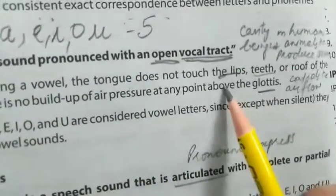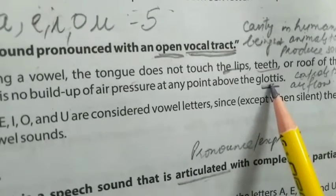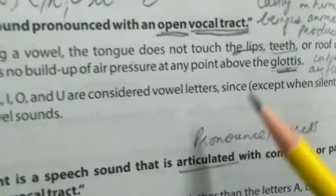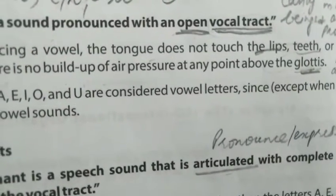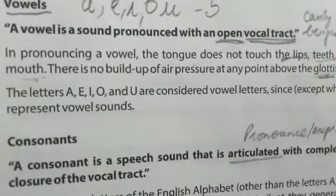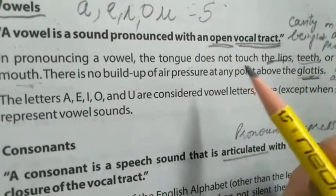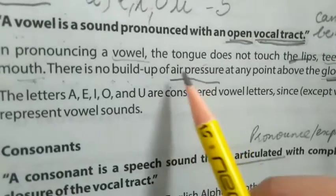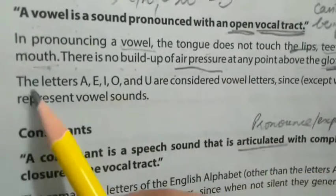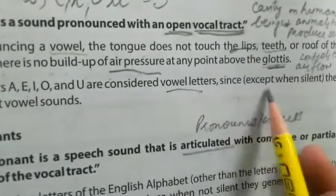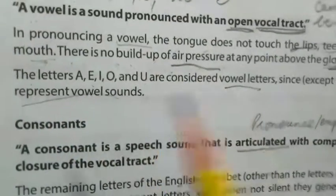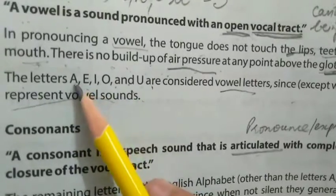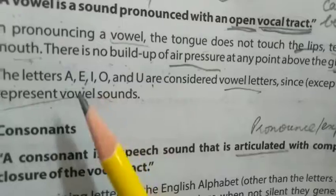There is no buildup of air pressure at any point above the glottis when pronouncing vowels. The glottis is a part of our sound-producing organ inside the body that controls the flow of air, helping us to speak. The letters A, E, I, O, U are considered vowel letters. Since — except when silent — they represent vowel sounds. In some words these letters are silent, but otherwise when in use they express vowel sounds.